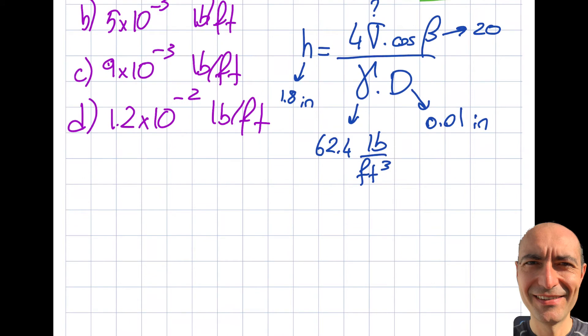Then let's rewrite this in this manner because I'm interested in surface tension. That will be h times the specific weight times the diameter divided by 4 times cosine of that angle beta. So let's insert the values then.